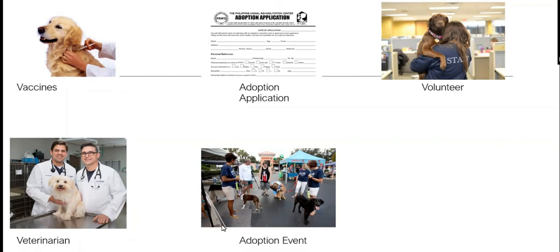Then we have the 'veterinarian,' which is basically a doctor but for pets — cats, dogs, hamsters, everything. And then we have an 'adoption event.' For example, at places like San Pedro de Pinta they usually hold adoption events where you can see the dogs and cats and adopt right there. They make a lot of publicity so people can come, see the pets, and adopt, because the animals really need homes and people need to find out about these events.